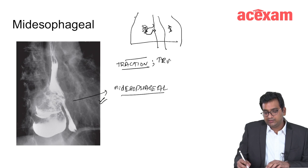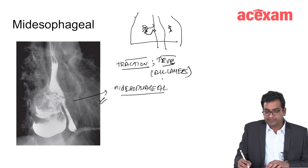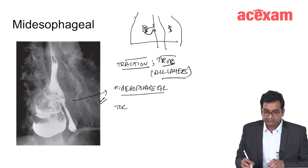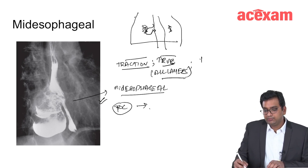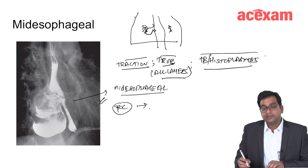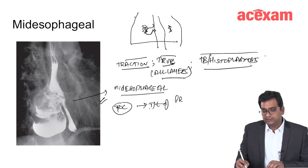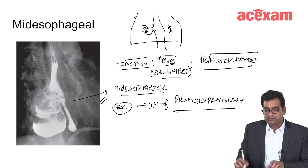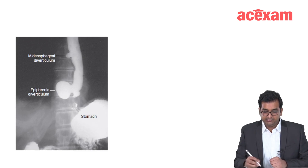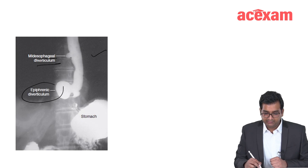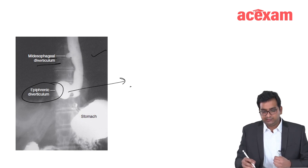Mid-esophageal diverticula is a true diverticula — it involves all the layers of the esophagus. The treatment is treatment of the primary cause, which is either tuberculosis or histoplasmosis. The investigation of choice is barium swallow. This diagram shows the presence of mid-esophageal diverticula and epiphrenic diverticula, which can also be asked about in examinations.